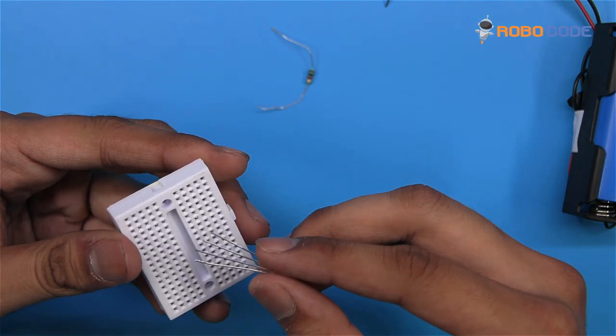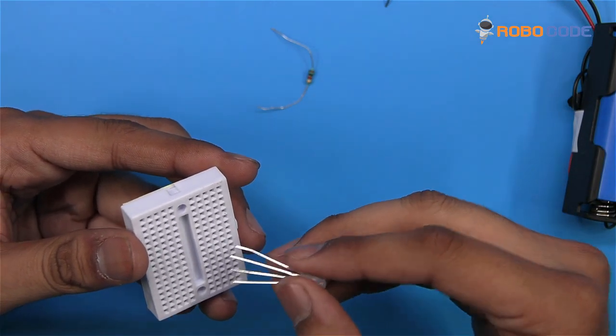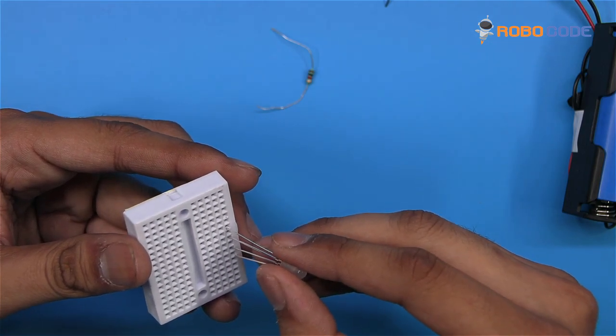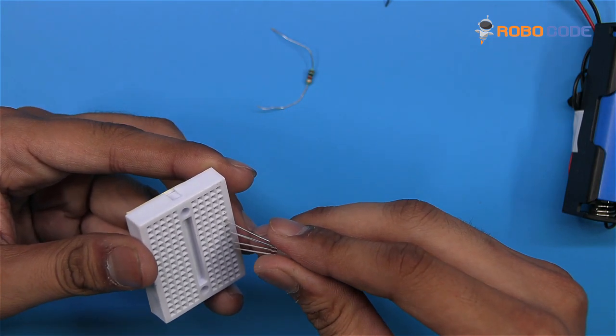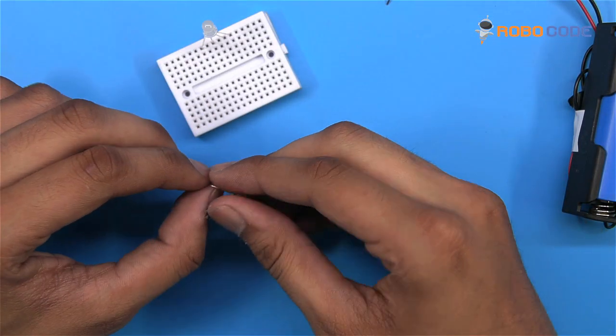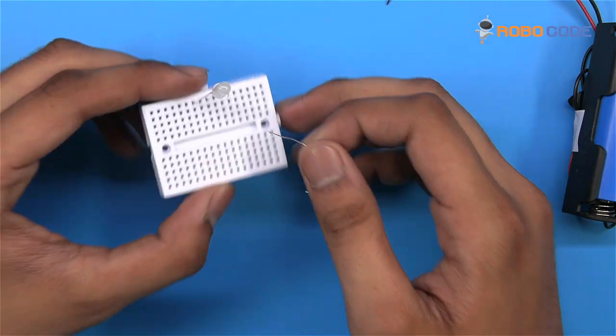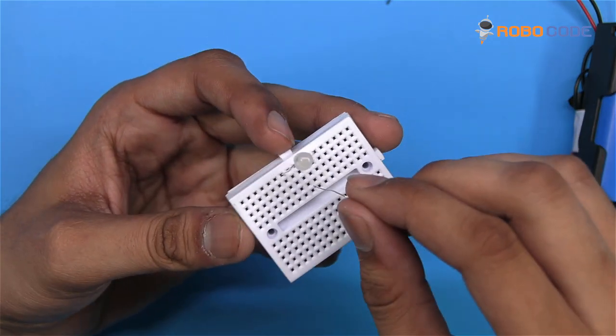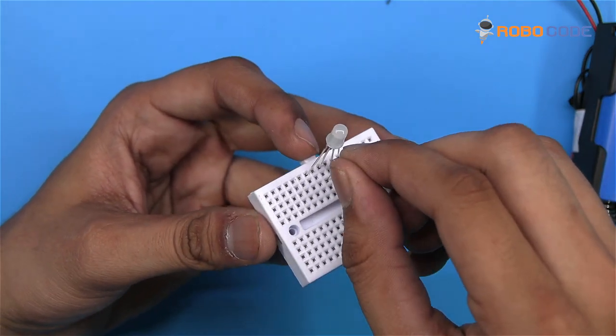Take the breadboard and RGB LED, and place it inside the breadboard as shown. Once that's done, take the resistor and insert it at the second pin of the RGB LED.